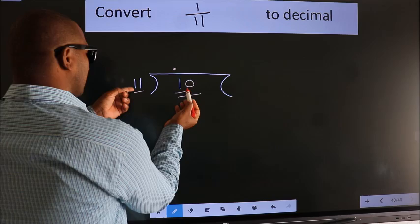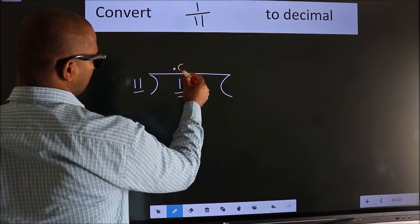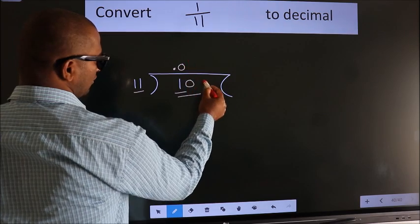We have already taken the decimal, so this time put 0 here to get 0 here. So 100.